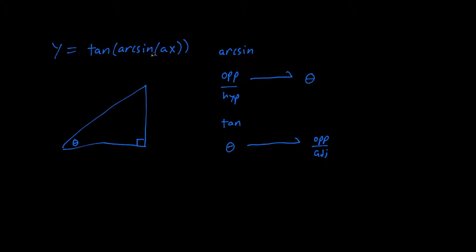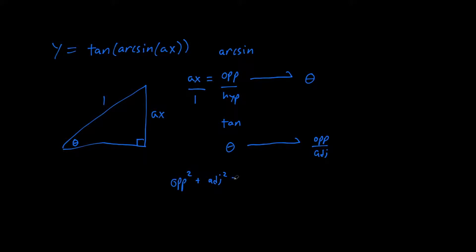In this case, we have arcsine of AX, so for convenience, we set opposite equals AX and hypotenuse equals 1. We want to solve for the missing side. We can do that using the Pythagorean theorem: opposite squared plus adjacent squared equals hypotenuse squared.